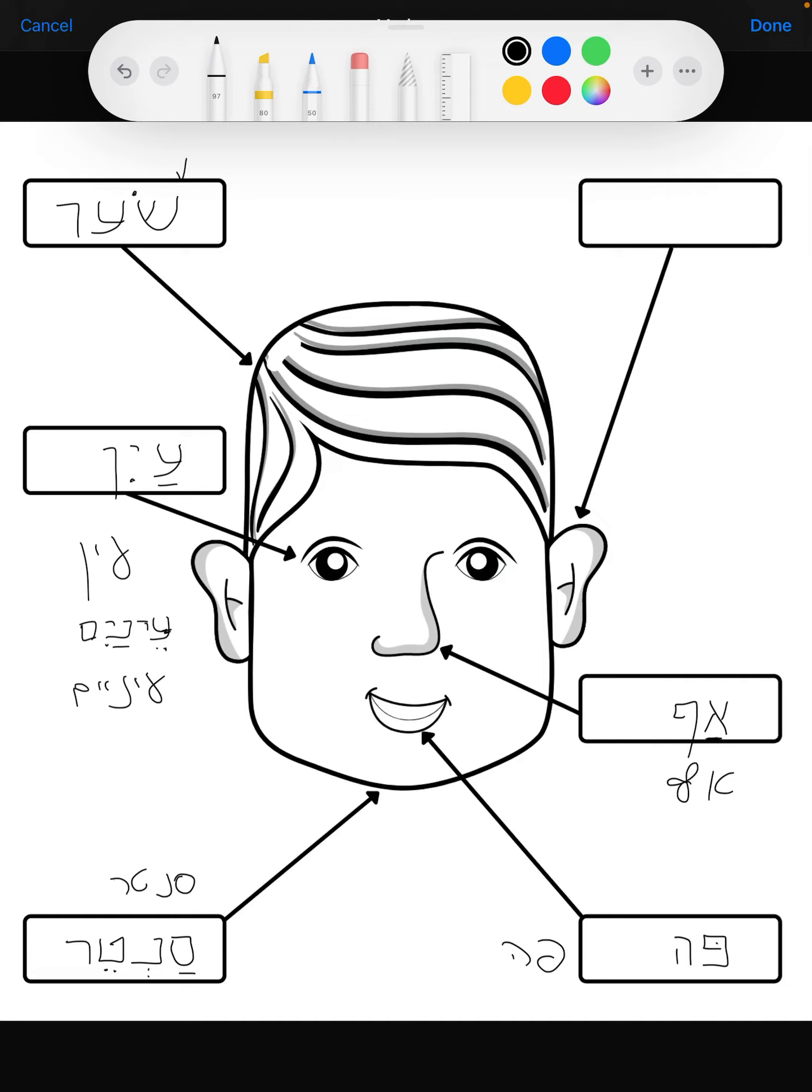If the dot is on this side, it's a sh sound, but it's on the left side here, so it's a s sound. So we know that this is a s sound.